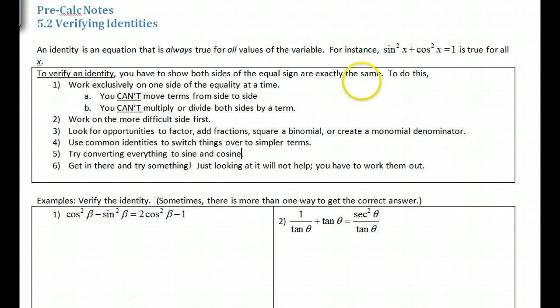There is a very specific way to do this, and you have to follow this procedure because this is what's acceptable. If you try to do it your own way, you just aren't communicating properly with other mathematicians. Number one, work exclusively on one side of the equality at a time. You can't move terms from side to side. This is not like solving. You want to pry apart one side and make sure that it looks like the other side eventually. You can't multiply or divide both sides by a term.